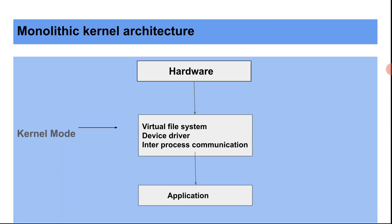Looking at the monolithic kernel architecture diagram: we have the hardware, and above it the virtual file system, device driver, inter-process communication, and application. As you can see on the screen, this is the kernel mode, where everything is handled as a single address space. The monolithic kernel creates a connection between hardware and application where all services — virtual file system, device driver, memory management, and process management — are provided to the application when required, all within a single address space.